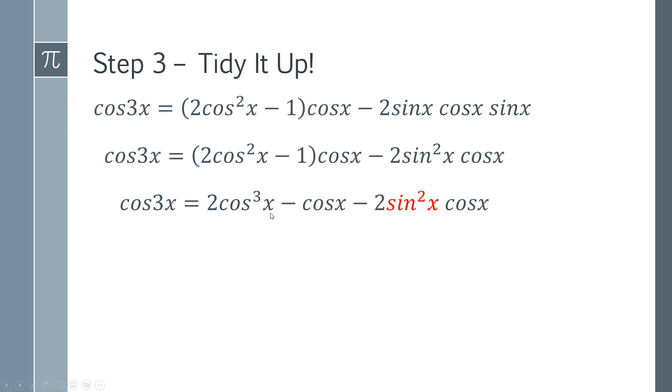Here we've got this sin squared x that is a bit of a problem. So we can use a simple identity. You may remember that cos squared x plus sin squared x equals 1. So if you rearrange that, you can say that sin squared x is 1 minus cos squared x. So we can replace the sin squared x with 1 minus cos squared x. So I've showed that substitution there in red.